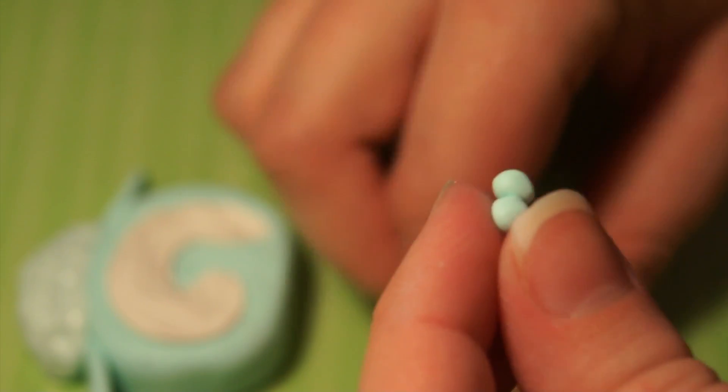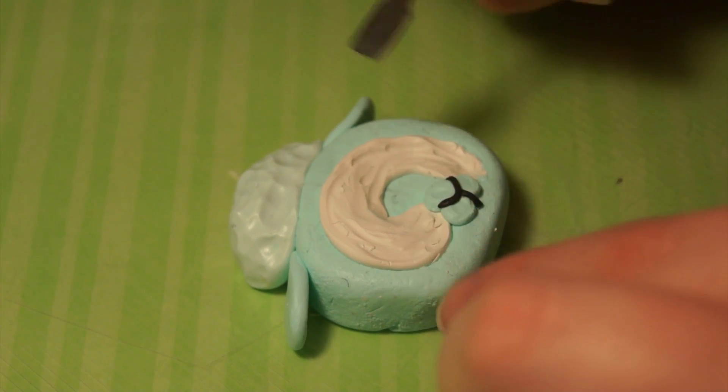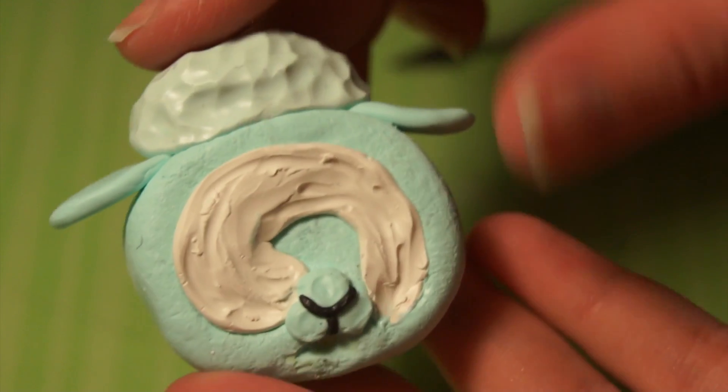Then for the mouth, I'm going to push together three balls of clay and then attach those to the face. Then I'm just going to use some really thinly rolled out black clay to outline the mouth features. There's his face and then I'm just going to add his eyes.